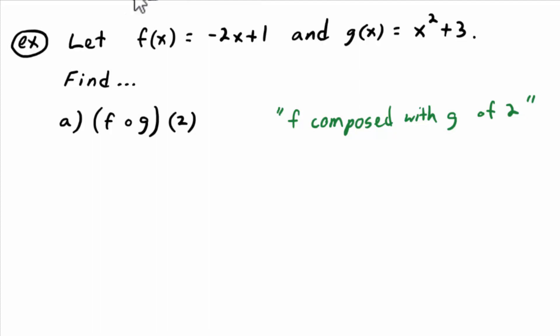So right away, what you want to replace the composite notation, the circle notation with, replace it with what it really means: f of g of 2. So this is the more familiar function notation. F composed with g of 2 means, by definition, f of g of 2. So every time you see the fog notation, just replace it with f of g. Anytime you see the goff notation, replace it with g of f.